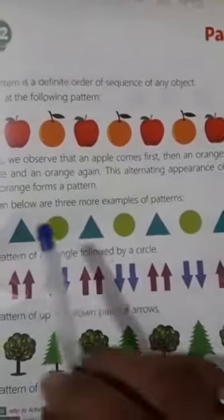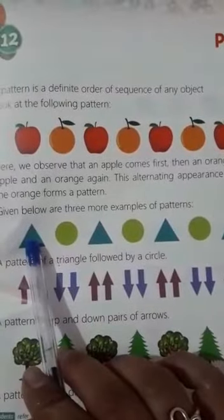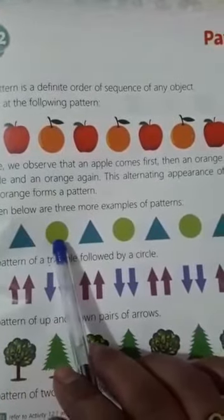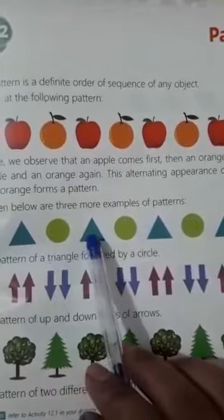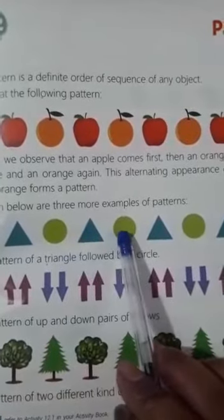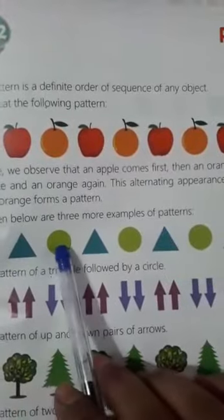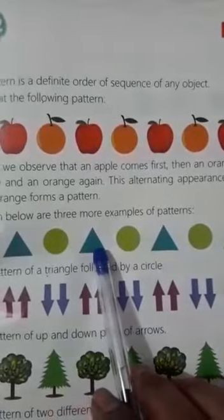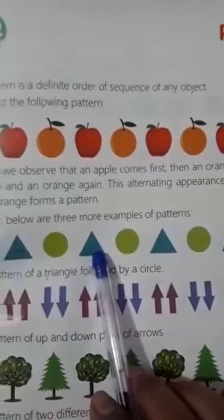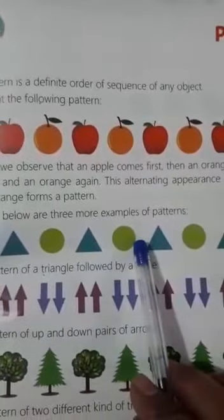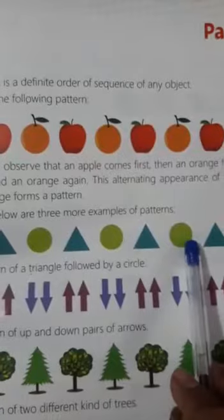Look one more example. Here, this is triangle. This is circle. Phir kya follow kiya hai? Again triangle. Then again circle. Hai na? Means triangle ke baad kya hoga? Circle. Again kya hua? Triangle. Toh alternate sequence me hai. Thik hai? Toh isi ko bhi hum, isko kya kehte hai? Patterns.